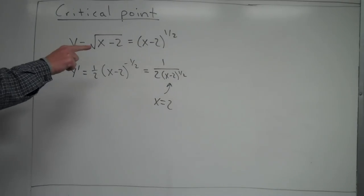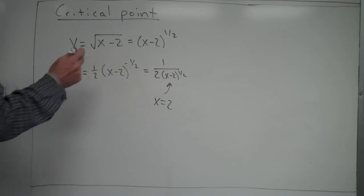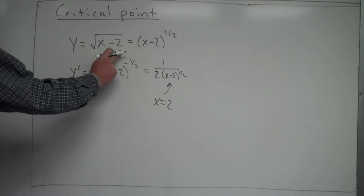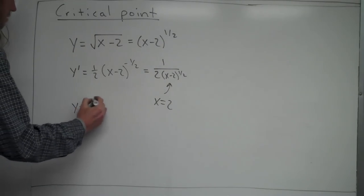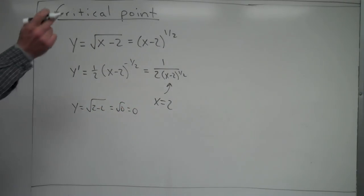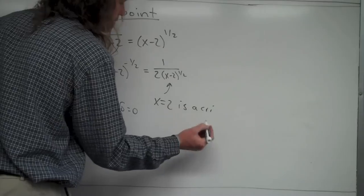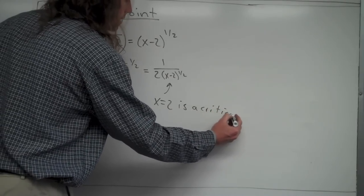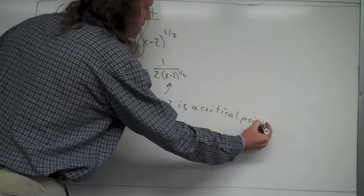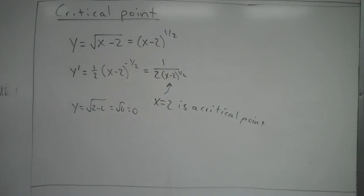At x = 2, the derivative is undefined. But checking the original function y = √(x - 2), if I plug in x = 2, I get √(2 - 2) = √0 = 0. So x = 2 is defined in the original function. That means x = 2 is a critical point — or more precisely, the critical point is (2, 0).